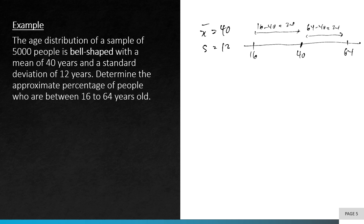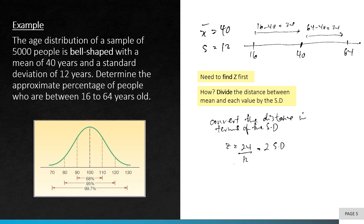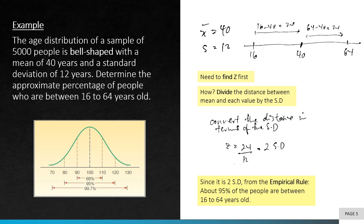As you can see, the mean is 40, so it stays in the middle, and we have the two limits — the lower limit of 16 and the upper limit of 64. The distance between these values and the mean is 24 respectively. From this, we can calculate z by dividing the distance between the mean and each value by the standard deviation. The z value is 2, obtained by dividing 24 by 12. Since z = 2, we refer back to the empirical rule: 2 standard deviations corresponds to 95%. Therefore, about 95% of the people are between 16 to 64 years old.